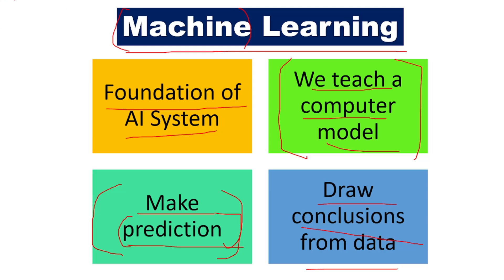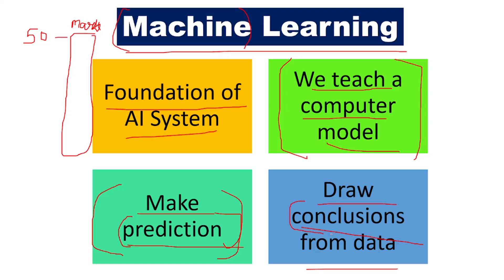For example, I have given data of 50 students and the marks scored by each and every student. The computer should make predictions, and based on the marks I have provided, it should draw a conclusion — whether all students have passed, how many students have passed, what is the pass percentage, what is the average marks of the class. The computer model needs to draw these conclusions and give me a report.